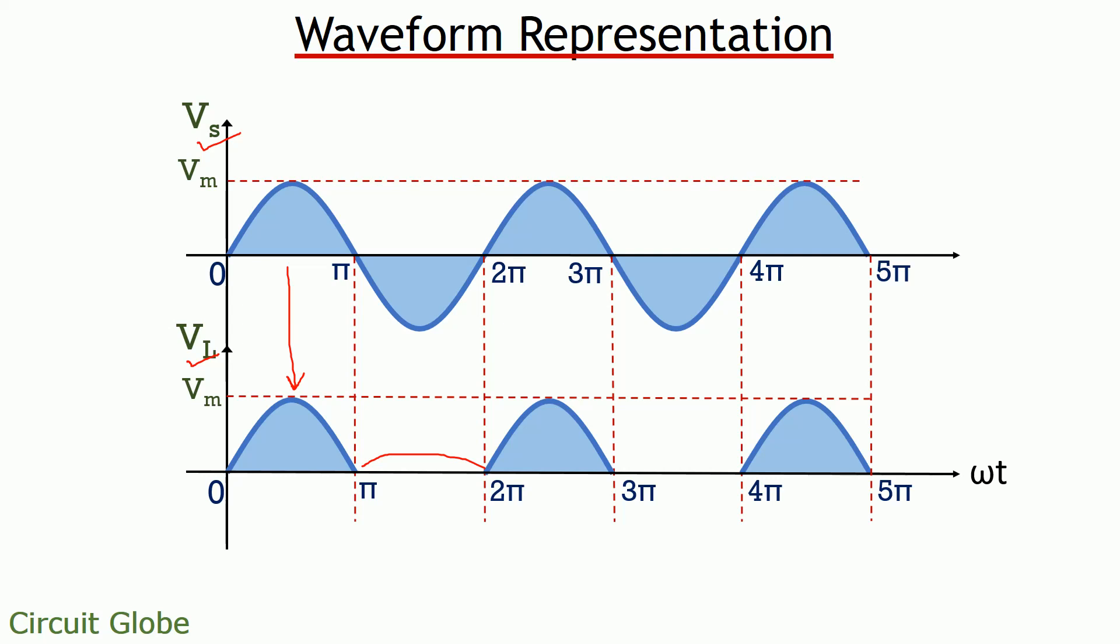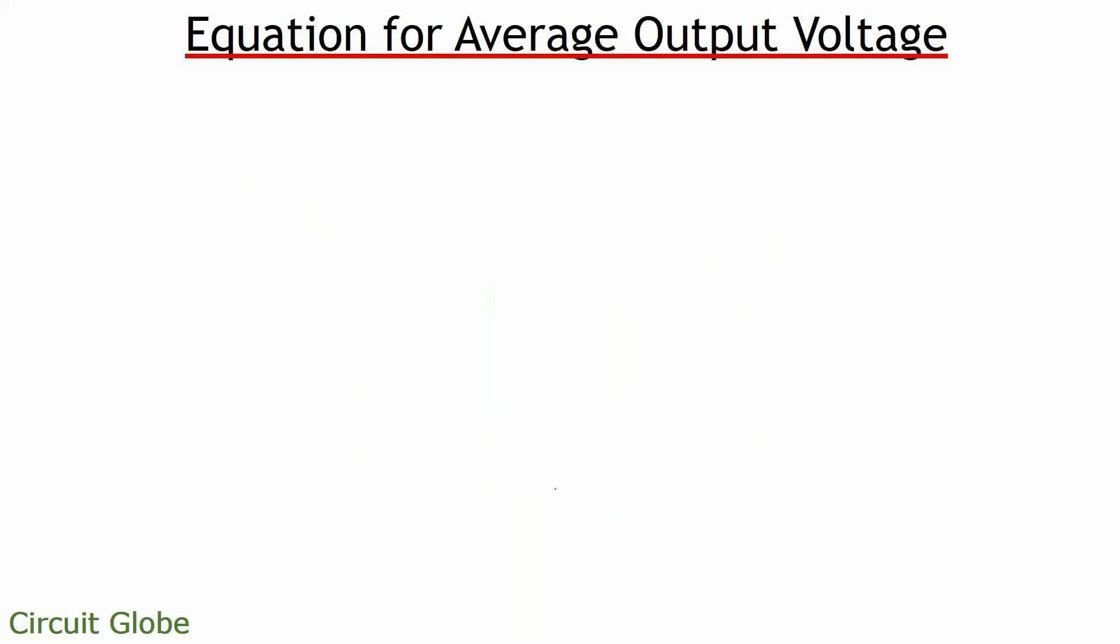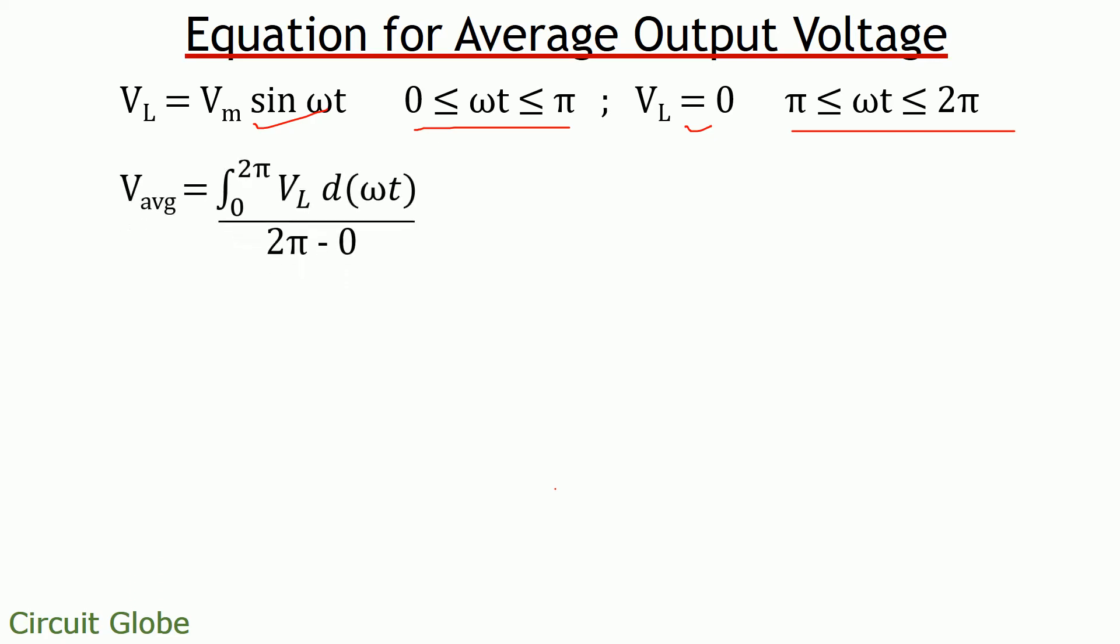Now friends, let's proceed further to determine the average output voltage for a half wave rectifier. So guys, after examining the graphical representation of output of half wave rectifier, we can clearly say that value of output voltage for limit 0 to pi will be Vm sin omega t and for pi to 2 pi it will be 0 volts. So in order to determine the average output voltage, we integrate the output voltage for one time period, that is between 0 to 2 pi.